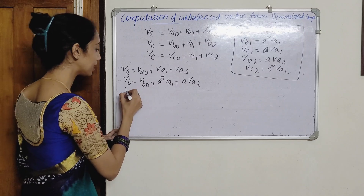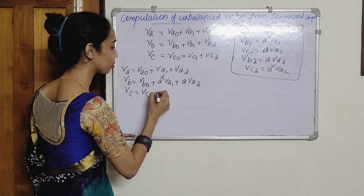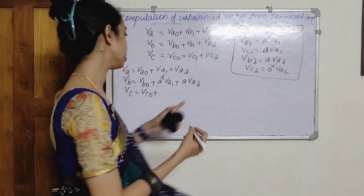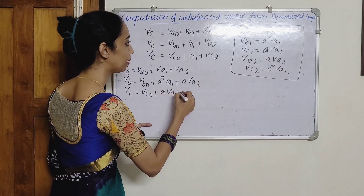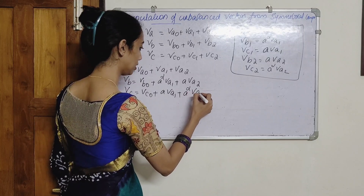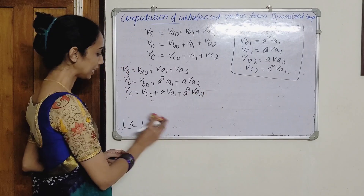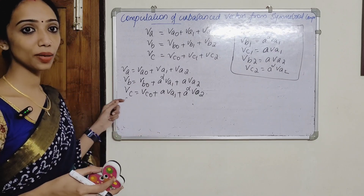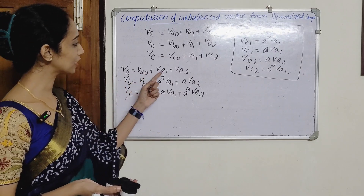Then VC: first VC0, then VC1 equals A into Va1, plus VC2 equals A² into Va2.